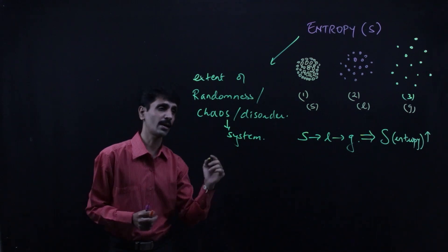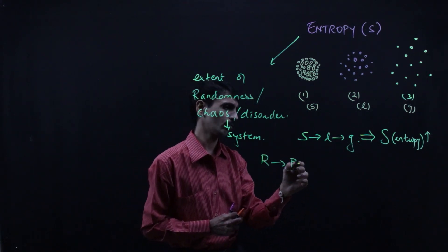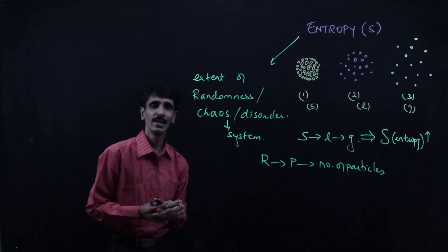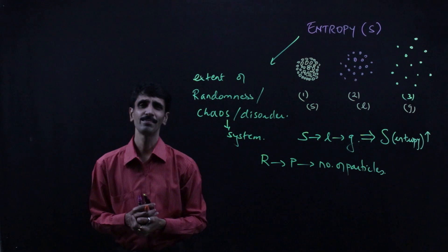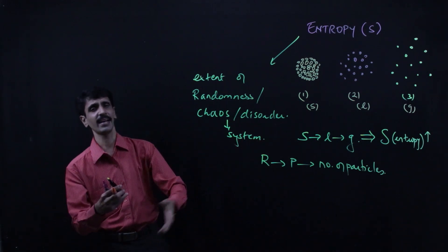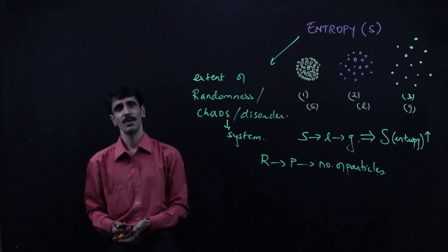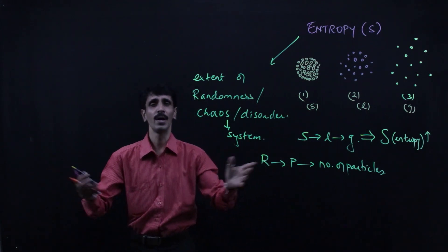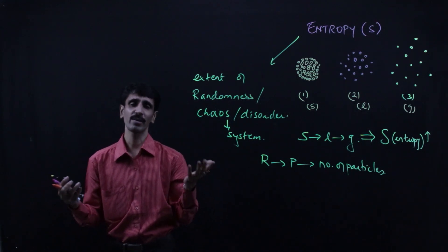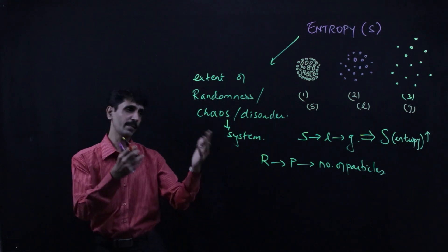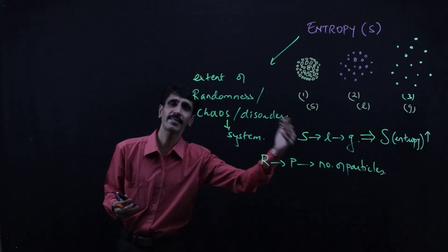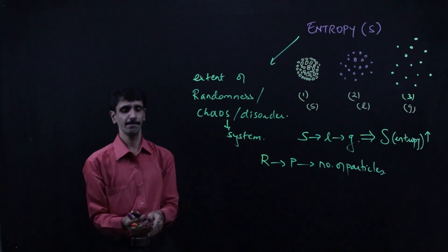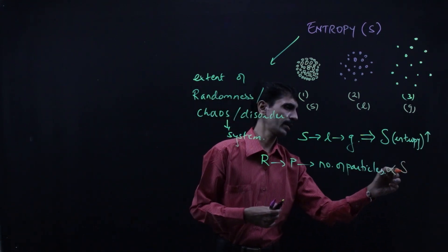Entropy can also be related to the number of particles. As we go from reactants to products, consider a simple example: in a classroom with 10 students versus one with 120 students, obviously there is more randomness, more disorder, and more chaos with 120 students. Similarly in a reaction, when the number of particles increases, the disorder increases and entropy increases. The number of particles is directly proportional to entropy.